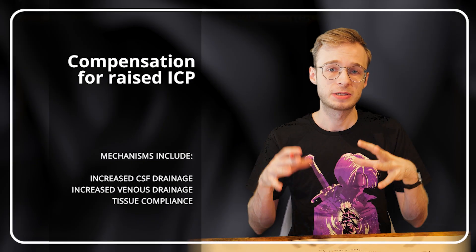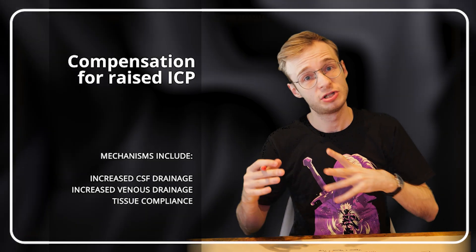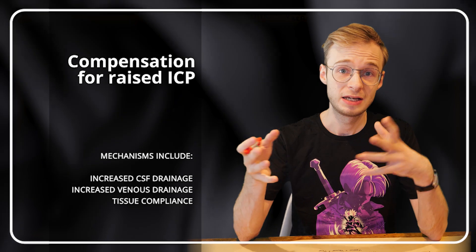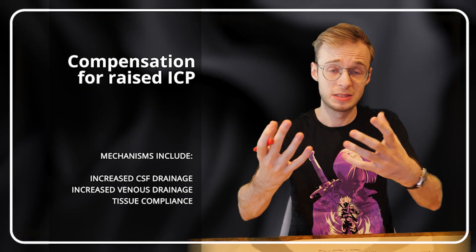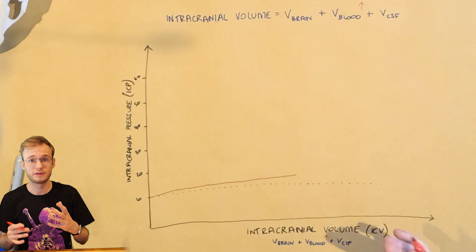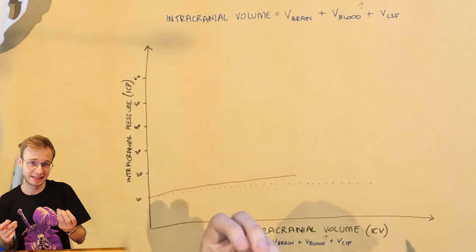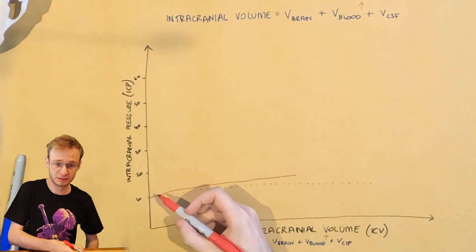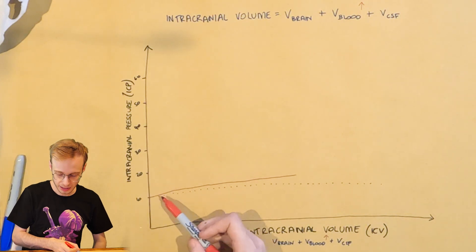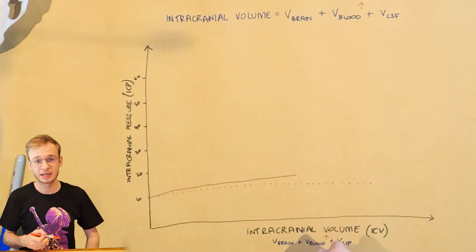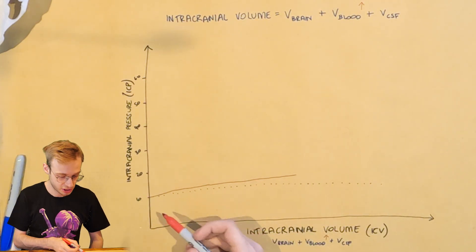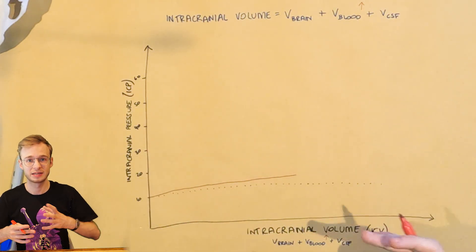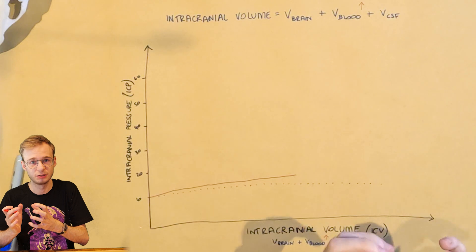But here's the thing, the body has compensatory mechanisms. It can shift CSF, this component, down into the spinal canal. It can increase venous drainage from the brain to pull blood away. And the brain tissue itself is slightly elastic, it's jelly-like in its consistency, and that means it can deform a little bit, which is what we see here. So an increase in volume, even if it gets quite large, may only produce a small increase in pressure inside the head because of these compensatory mechanisms, and the brain can take a little bit of squeezing.